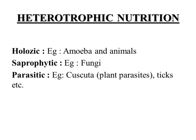On the basis of feeding habits, heterotrophic nutrition is divided into three categories: first is holozoic, second is saprophytic, and third is parasitic. In holozoic mode of nutrition, animals take in solid food and break it down into smaller molecules inside their body.